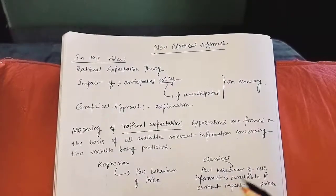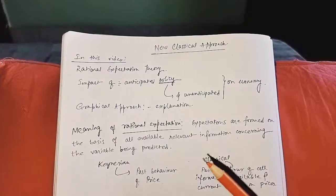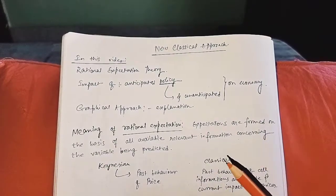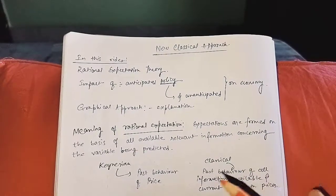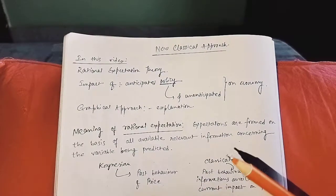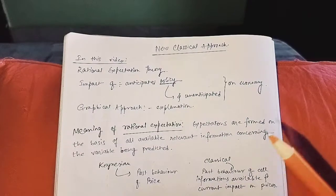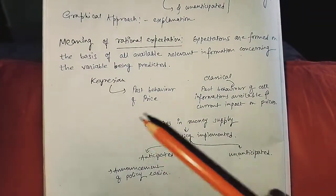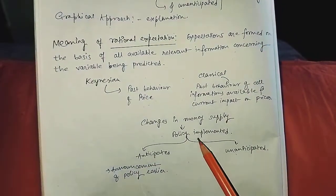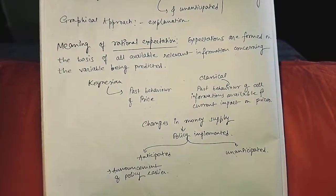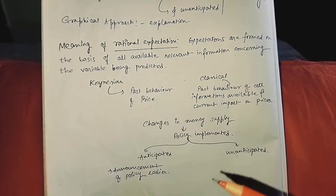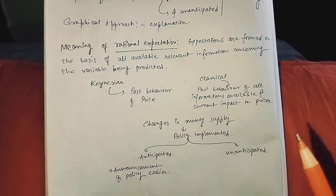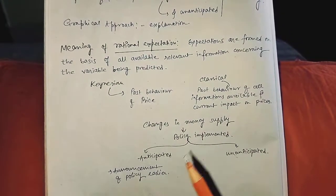But classical economists say that it doesn't happen. It doesn't depend on this, but not only the past behavior of prices, but government tax expenditures, investment expenditures, and different things which can impact our inflation and output and employment. All the things after seeing, people expect whether it will increase or not. Keynesians they don't say, they say no fluctuations.